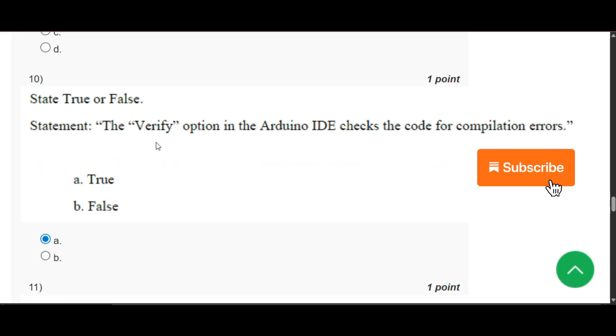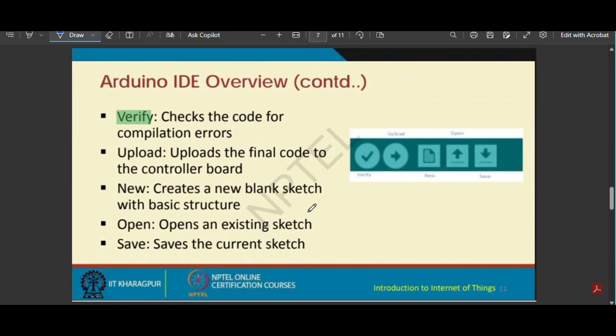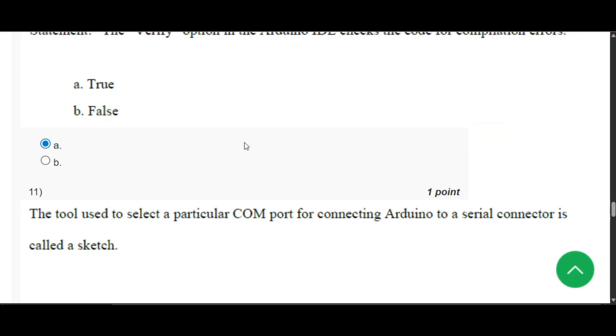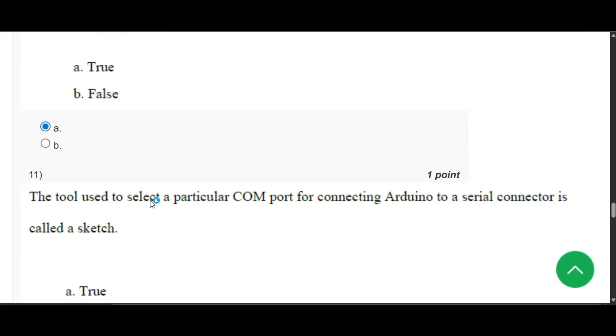Now question number 10: State true or false. The verify option in the Arduino IDE checks the code for compilation error. Here you can see that the verify checks the code for compilation error. So option A, that is true, will be the answer.